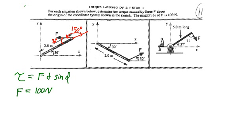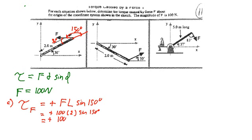In case A, the torque produced by the force F will be positive because it causes a clockwise rotation, F times the length of the arm times the sine of 150 degrees. So that will be plus 100 Newtons times 2 meters times the sine of 150 degrees, and so that equals positive 100 Newton meters.